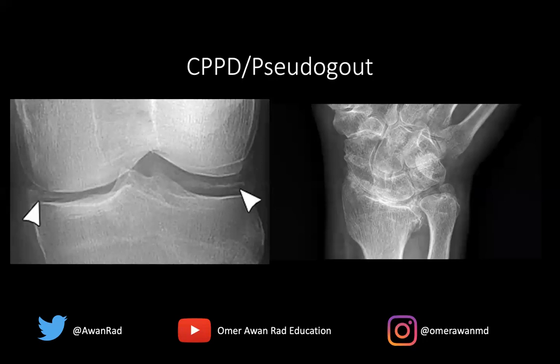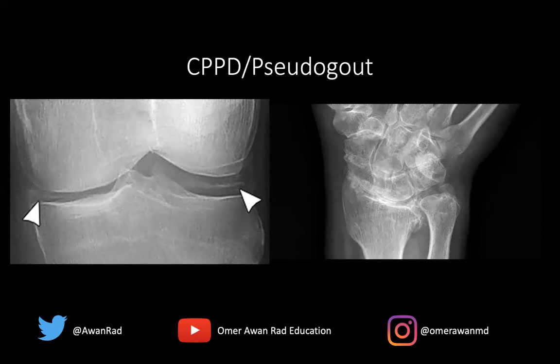Moving on to CPPD or calcium pyrophosphate deposition. Pseudogout is just a clinical term for an acute CPPD flare. It presents with pain and a swollen red joint — the presentation is going to be similar or almost identical to gout, so the clinical presentation isn't necessarily going to help you. Typically this occurs in older individuals, greater than 50 years old, male or female.